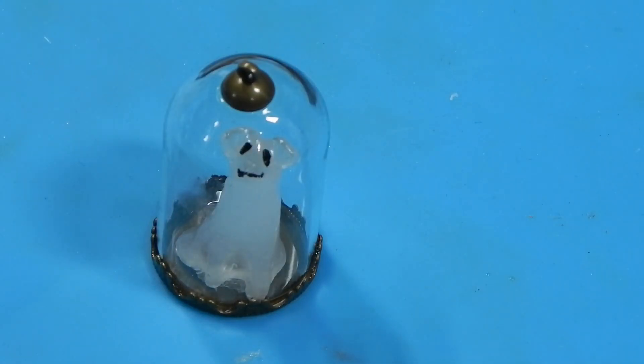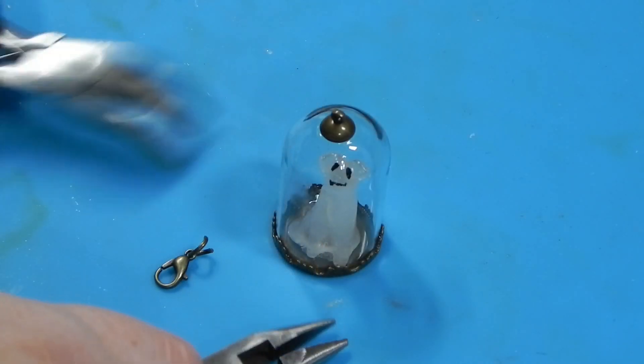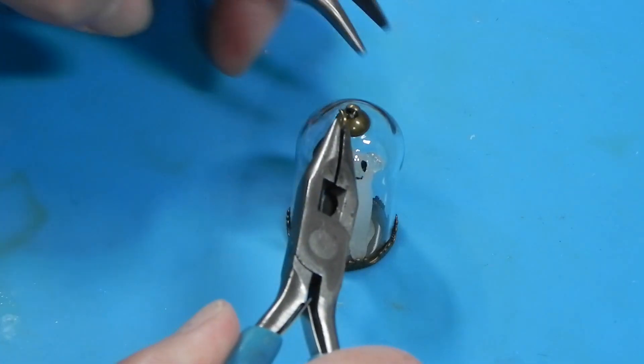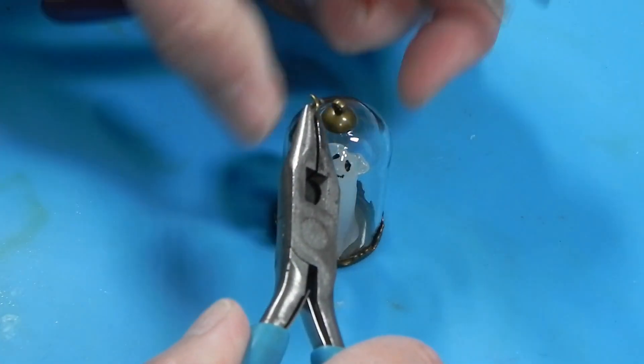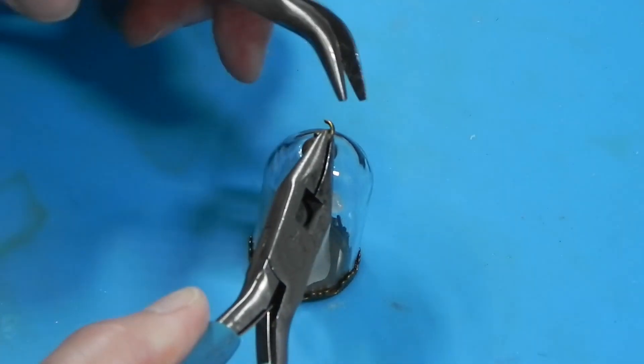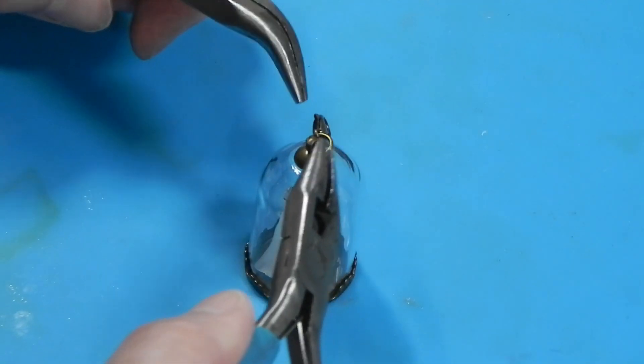And voila! But of course now we have to install the clip. This is just a little lobster claw and a jump ring. It's just a matter of working the jump ring in. Nothing real technical here.